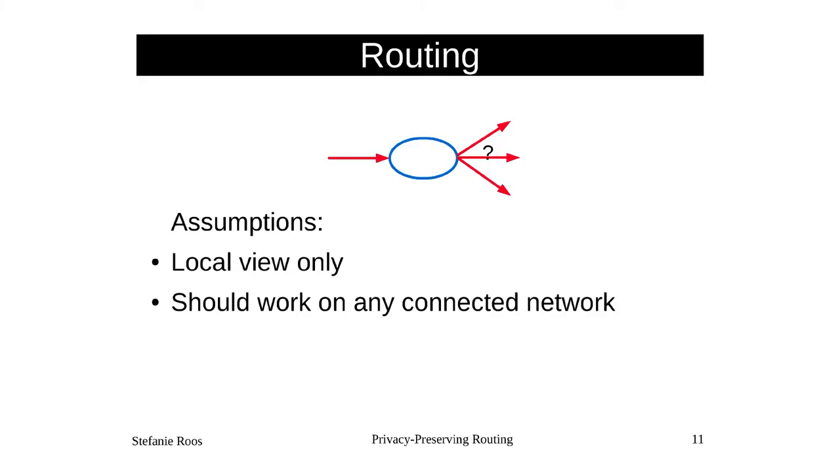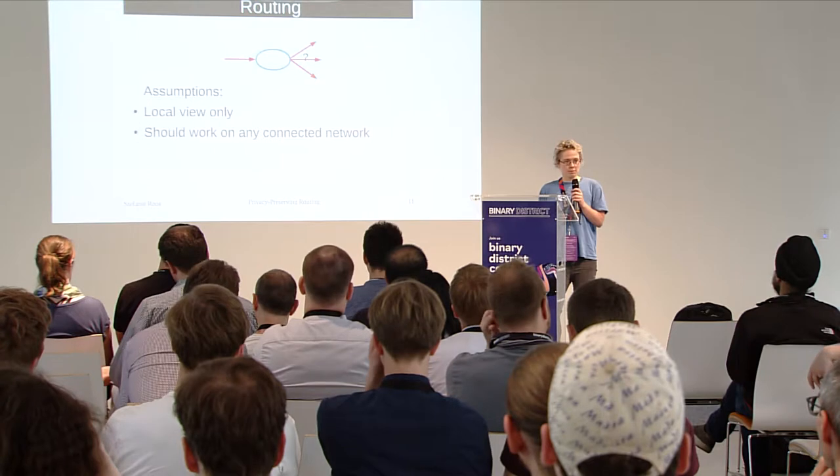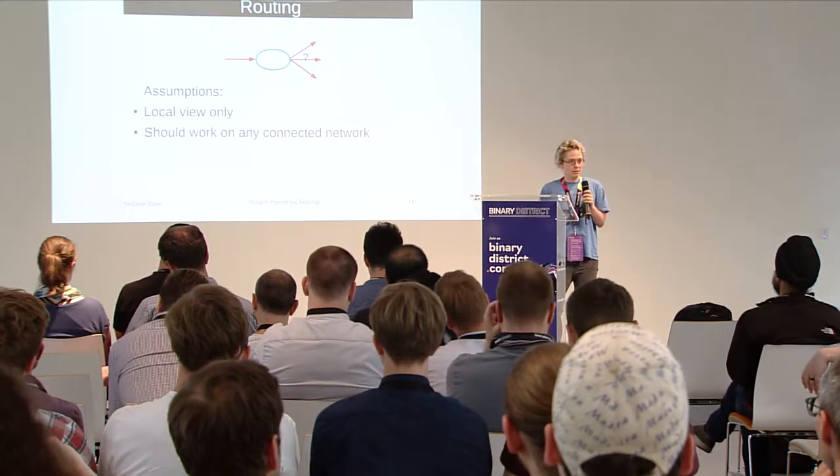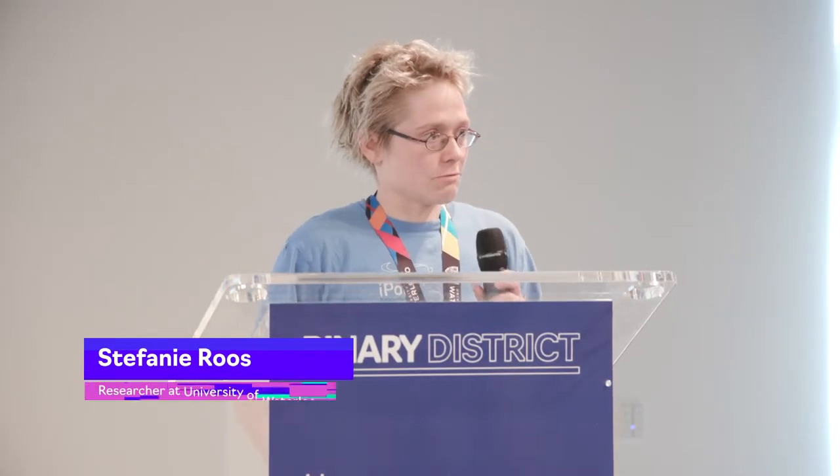Even if you're not interested in privacy, you might be interested in this for scalability reasons. If everyone deciding on routes needs the view of the network as it is at that point in time, you have to spread all updates to everyone really fast — and then we're essentially back in the blockchain scenario. We have to spread state information to everyone in the network in a very short time period. If we only rely on a local view, we don't have to worry about spreading updates at all.